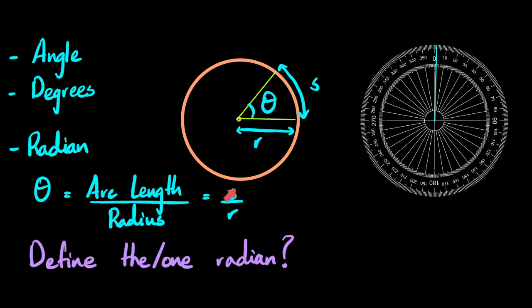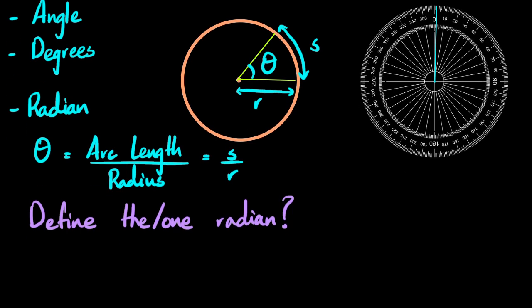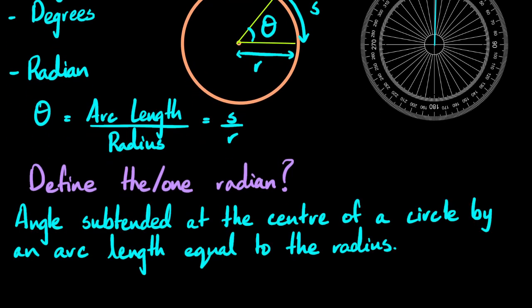So you have arc length and radius. If both of these are equal, you will get the answer for theta, which is the angular displacement, as one. And this is one radian. So when we're talking about the definition of a radian, this is the angle subtended, which is just a fancy word for produced at the center of a circle by an arc length, that's this S here, when it's equal to the radius of the circle.